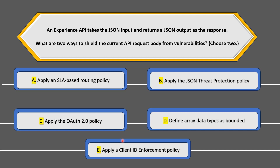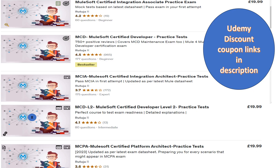If you look at all the available options, you will notice that all these policies help you in one way or another to shield your API from vulnerabilities and secure your API endpoint. We have to look at the question closely and carefully, because the question says we need to select the two ways to shield the current API request body from vulnerabilities. So 'API request body' is a key thing to note here.